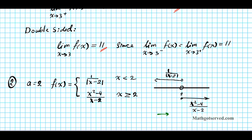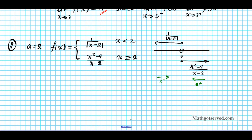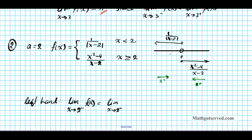The left-hand limit is when you're approaching two from the left — this is the function you're looking at. The left-hand limit is the limit as x approaches two from the left of one over the absolute value of x minus two. Since you're on the left side, we're going to take the negative piece of this absolute value function. So it's going to be one over the limit as x approaches two from the left of negative x minus two.